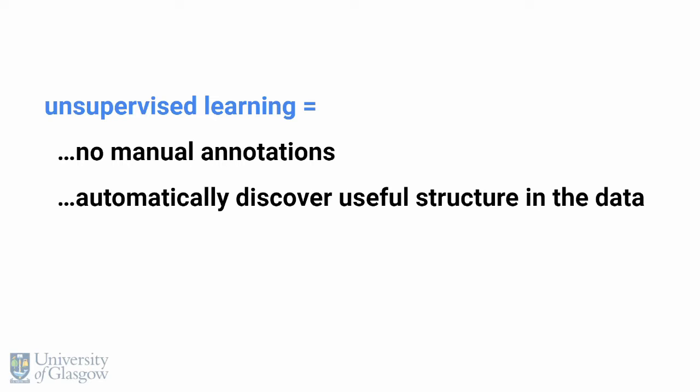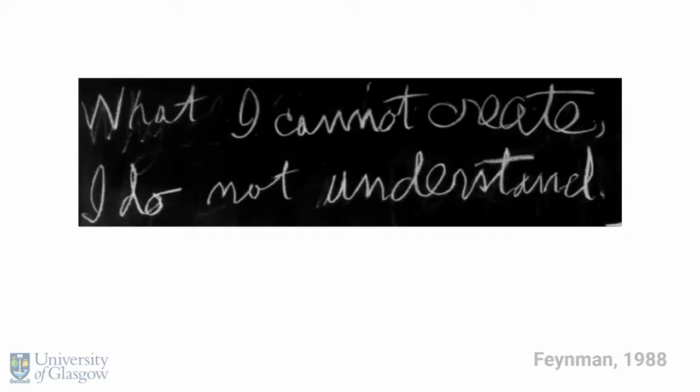By generative modelling, I mean learning the distribution of a dataset. If we're given a dataset of photographs of cats, I want to learn the probability distribution they were drawn from, and learn a tractable distribution that I can then draw new samples from — new cats. The reason that's useful for unsupervised learning is motivated by a quote from Richard Feynman, who said: 'What I cannot create, I do not understand.' So if I train a model to generate cats, it must learn something about the structure of cats — that they're furry, they have pointy ears, four legs, and so on — because otherwise it wouldn't be able to generate new, realistic cats.